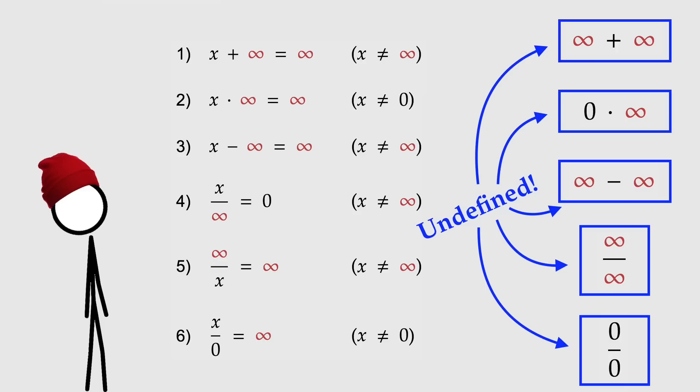Might seem weird. Infinity plus infinity, surely that should just be infinity again, right? Ah, but remember, in an extended projection, positive and negative infinity are the same. So, infinity plus infinity is indistinguishable from infinity minus infinity. And that's the problem. That's why it doesn't work.